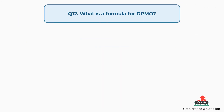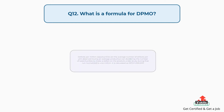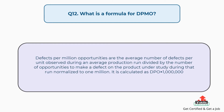Question number twelve: What is the formula for DPMO? Defects per million opportunities (DPMO) is the average number of defects per unit observed during an average production run, divided by the number of opportunities to make a defect on the product under study during that run, normalized to one million. To calculate DPO, use the given formula.